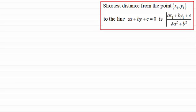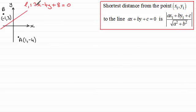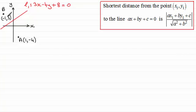To demonstrate this, let's say we've got a line L1 whose equation is 3x − 4y + 8 = 0, so it's in this form here. I've got two points to demonstrate this method with: point A having coordinates (1, −4), and point B on the other side of the line with coordinates (−1, 3). The shortest distance will be a perpendicular drawn from the point to the line.